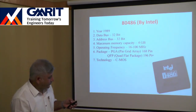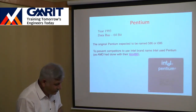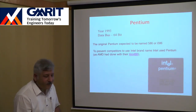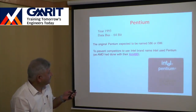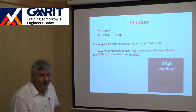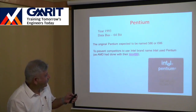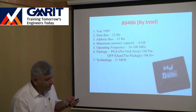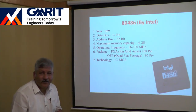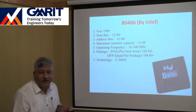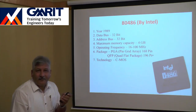After the 80486, Intel launched the Pentium processor in 1993. Originally they planned to name it the 80586, following the pattern of 80186, 80286, 80386, 80486. However, they changed the name to Pentium. The reason was that AMD had launched a competing processor named 'AM486,' causing customer confusion about whether it was an Intel product.